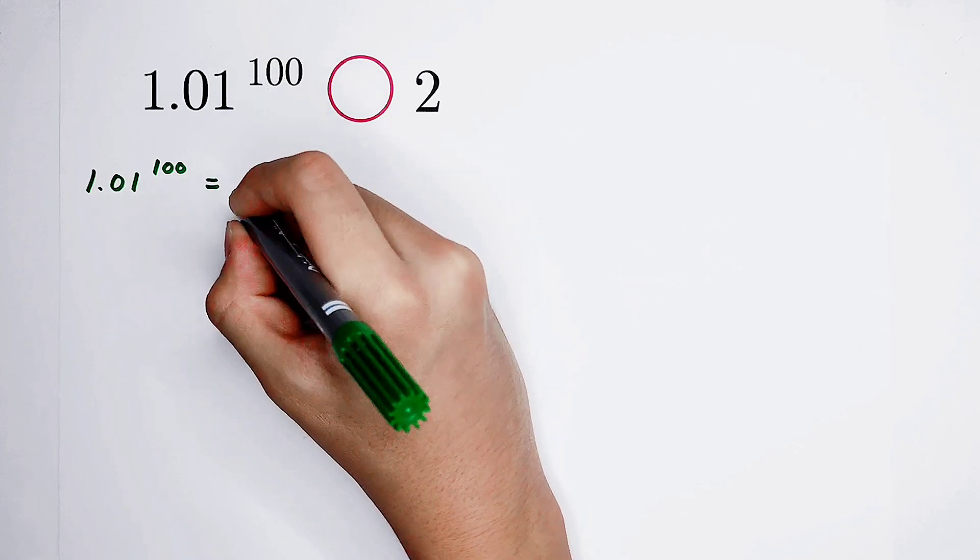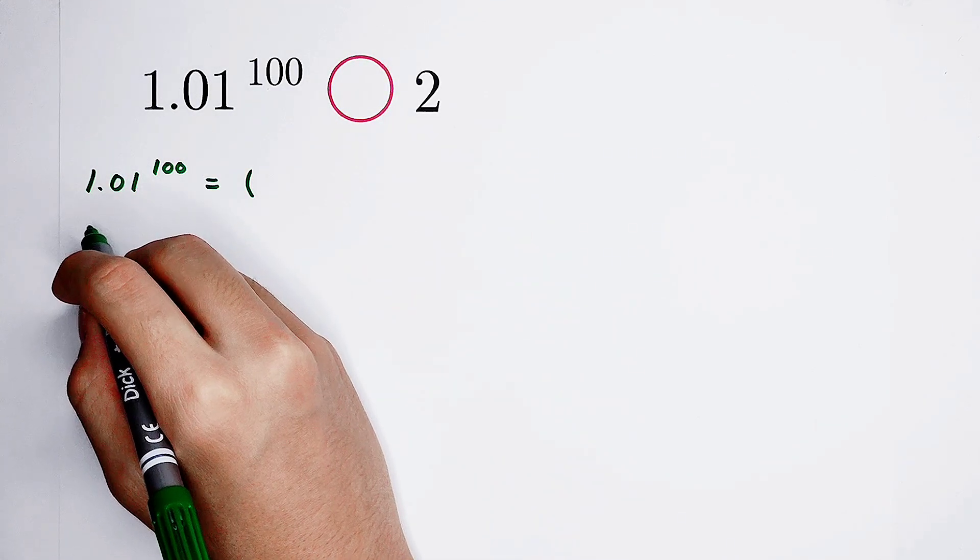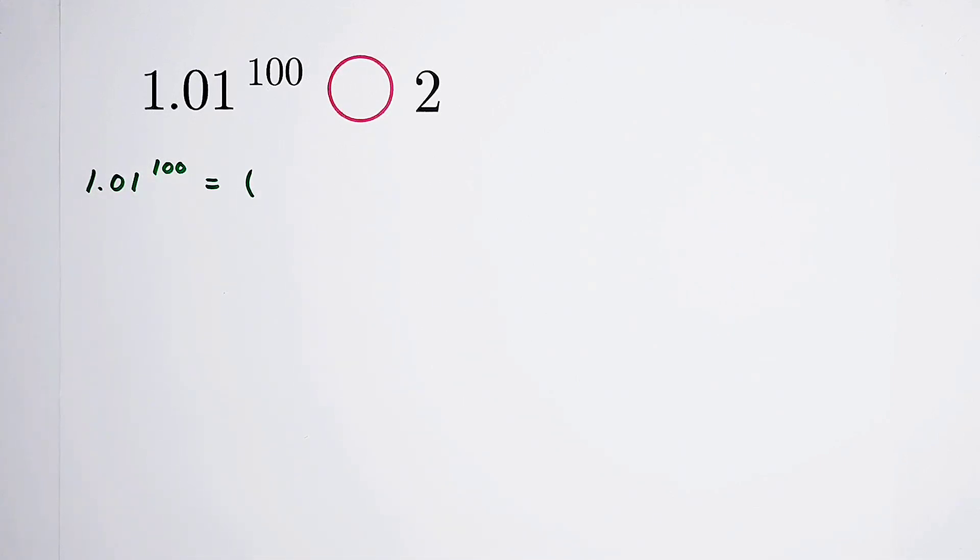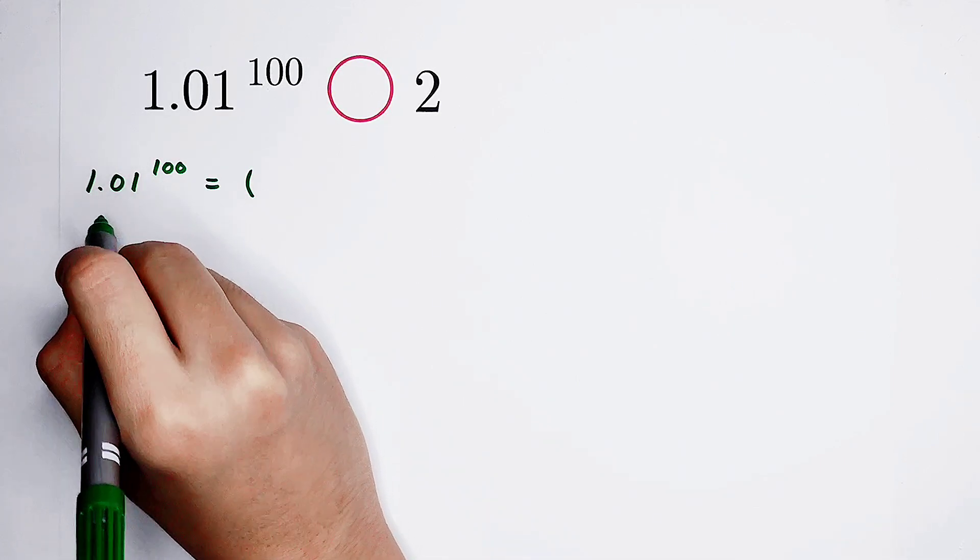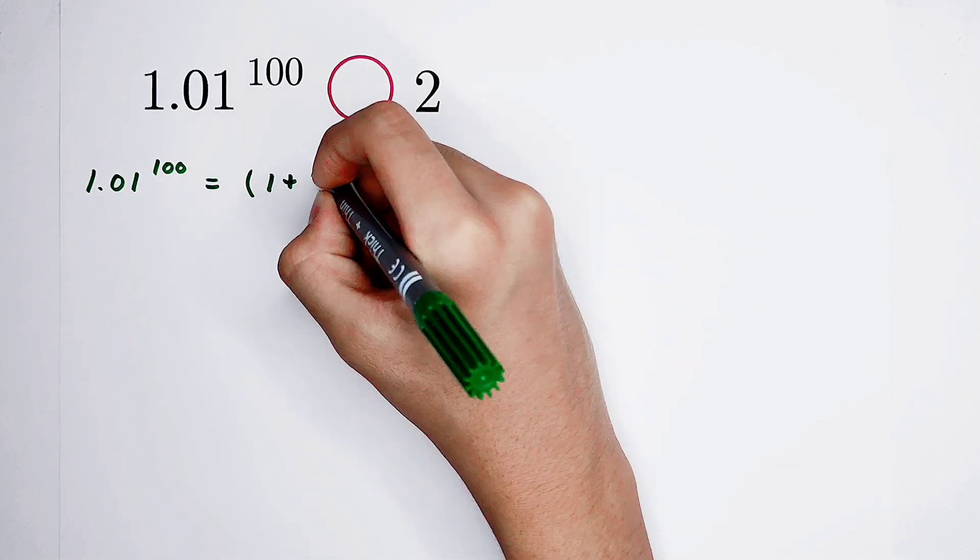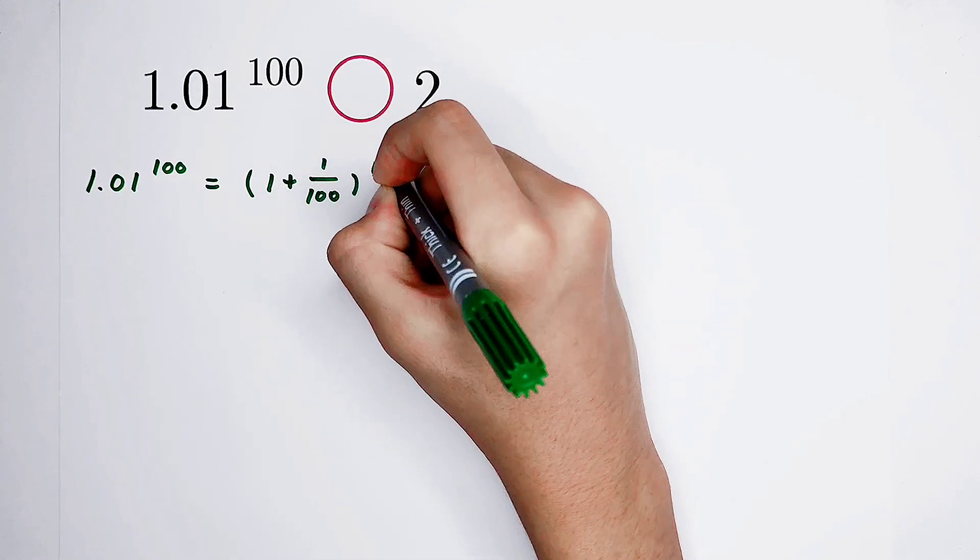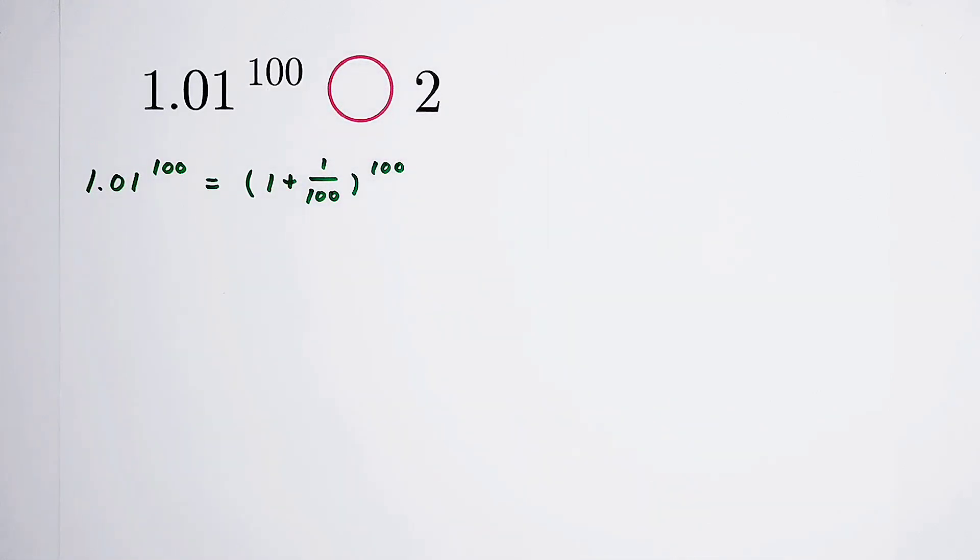So now, I mean that 1.01, it can be written as, look, 0.01 is 1 over 100. So it can be written as 1 plus 1 over 100. An exponent, 100. Very good.